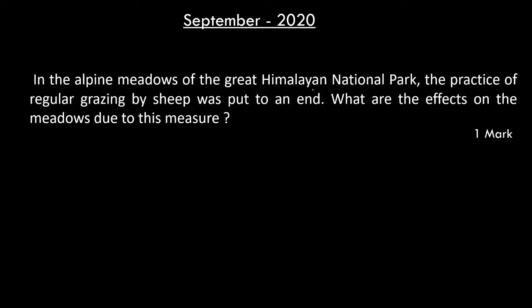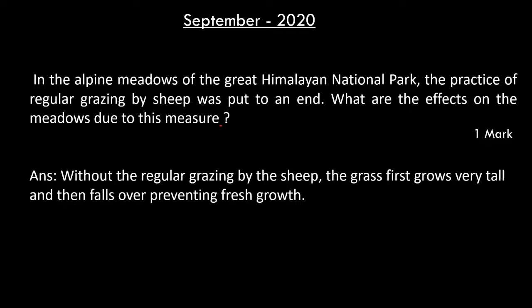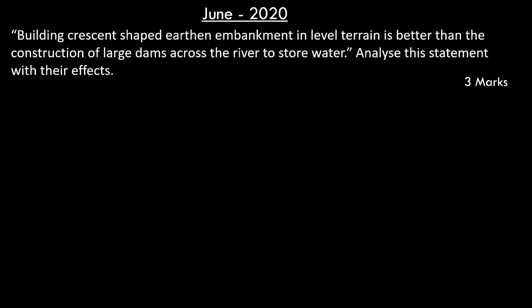In the alpine meadows of the Great Himalayan National Park, the practice of regular grazing by sheep was put to an end. What are the effects on the meadows due to this measure? The answer is: without the regular grazing by the sheep, the grass first grows very tall and then falls over, preventing fresh growth.